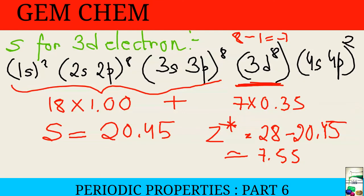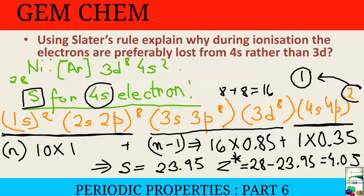This question can also be asked in a different way: during filling of atomic orbitals, electrons first enter 4s and then 3d, but during ionization electrons are lost from 4s rather than 3d. To answer fully, you would first explain using the Aufbau principle and then apply Slater's rule. This will be discussed in more detail in another video.